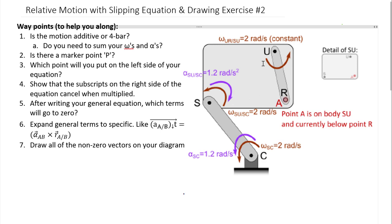There is one additional body: instead of having a slot or slipping on body SUA, we have an arm that is pinned at point U — a separate rigid body swinging around point U — with a constant angular velocity of 2 rad/s. That constant angular velocity will factor into our slipping terms.